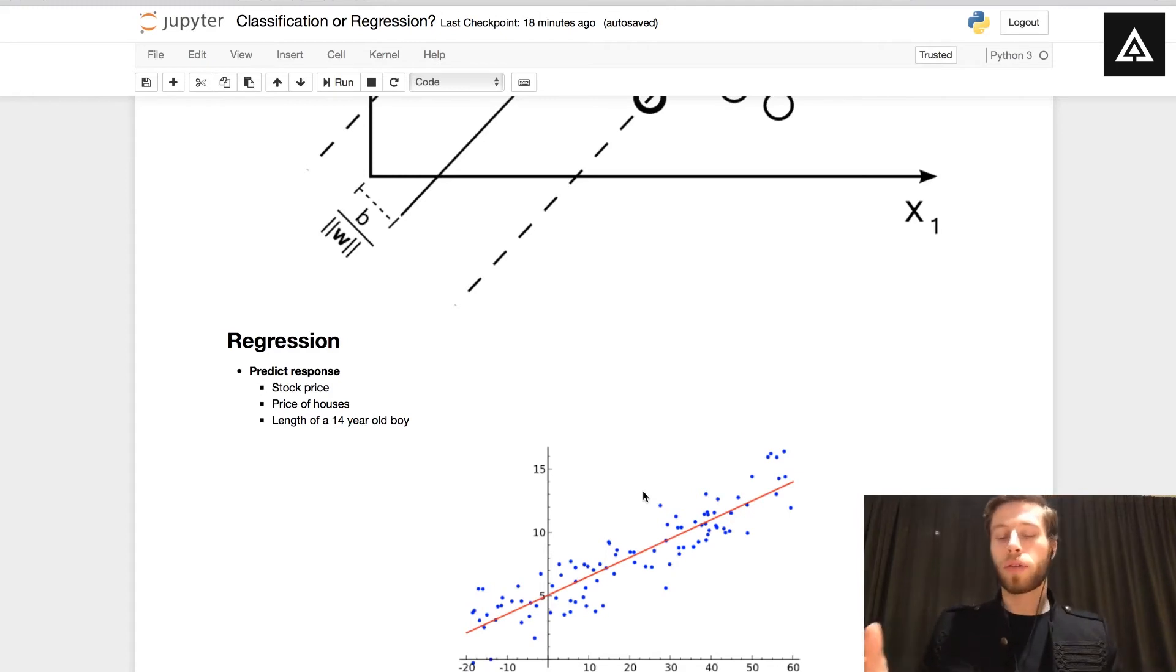You see we have some kind of continuous variable here right? We're trying to predict that very variable, the very price, the very number in that very sense. We are not working here with discrete values like male, female, cat, dog. We are working with some kind of continuous variable that we're going to predict here with our regression.